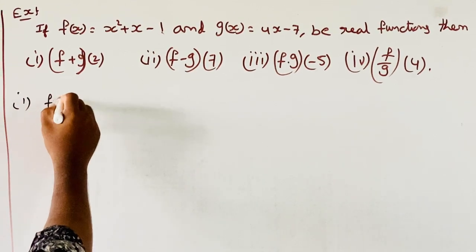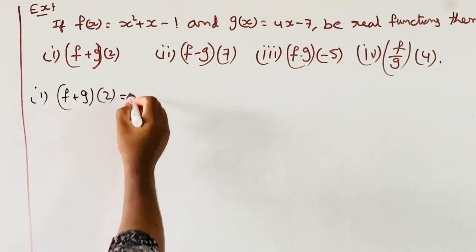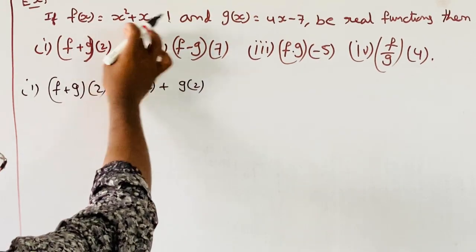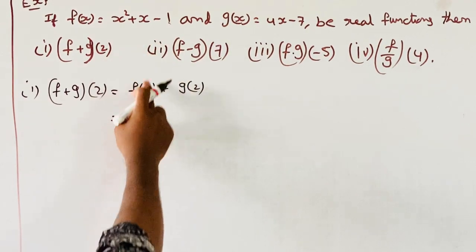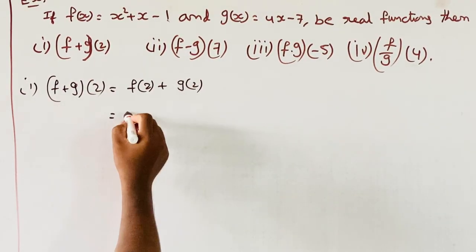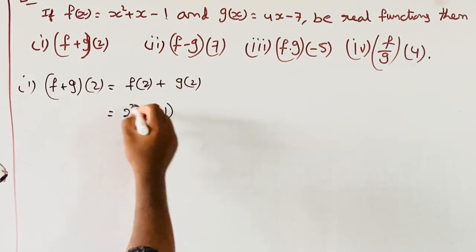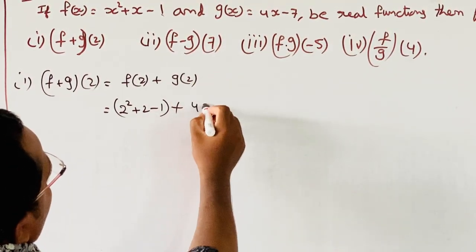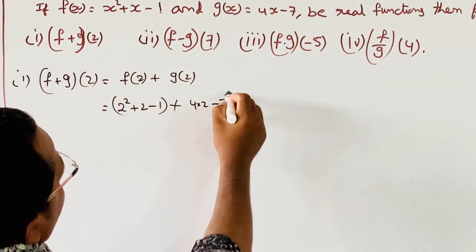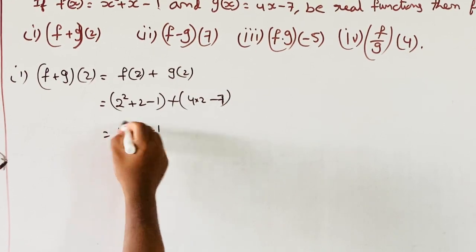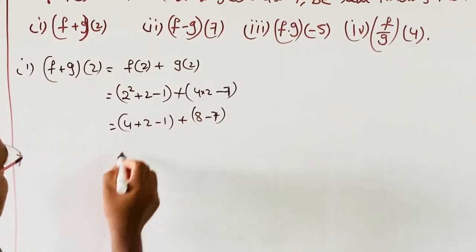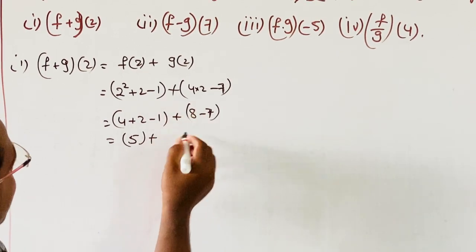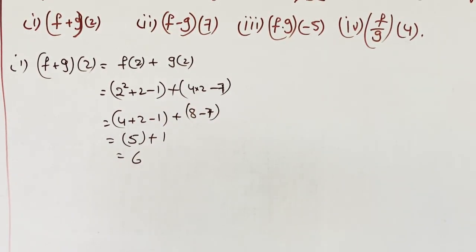First, F plus G of 2 equals F of 2 plus G of 2. F of 2: substitute X equals 2 into X squared plus X minus 1 giving 4 plus 2 minus 1 equals 5. G of 2: substitute into 4X minus 7 giving 8 minus 7 equals 1. Therefore F plus G of 2 equals 5 plus 1 equals 6.